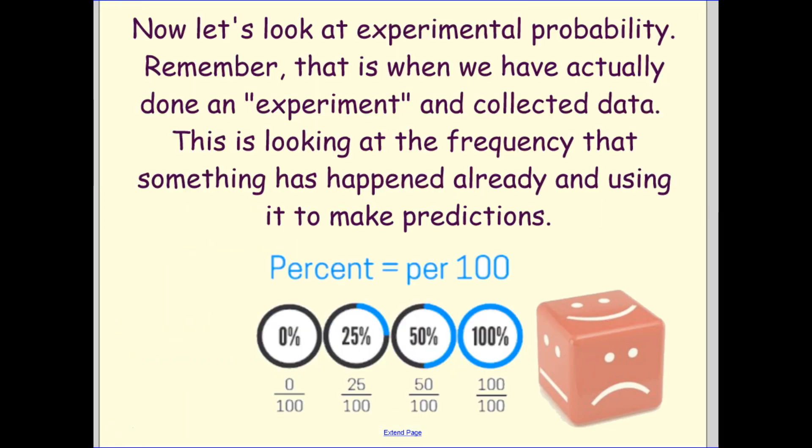Okay. One last thing. So what if we do an experiment and we find ourselves an actual number? We can still use the frequency that something actually happened and we can use it to make ourselves a prediction. And remember that percent means per 100. So I'm just simply going to take my percent and put it over 100 as an easy way to convert a percent to a fraction.